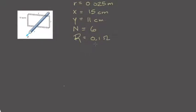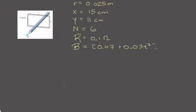They give us the resistance of the rectangular wire, so the total resistance is 0.1 ohms. And then they give us the magnetic field — it is uniform throughout a cross-section of the solenoid, but it changes with time. So maybe B = 0.07 + 0.03t² tesla. Essentially, we can look anywhere within that solenoid at any particular time and it'll have the same magnetic field, but if we look at a different time, that magnetic field will change.